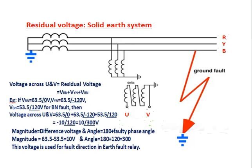This voltage equals the reduced voltage, and the angle is the reversal of the B-phase angle. This voltage is used for fault direction detection in earth fault relays.